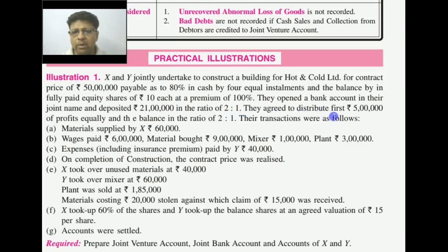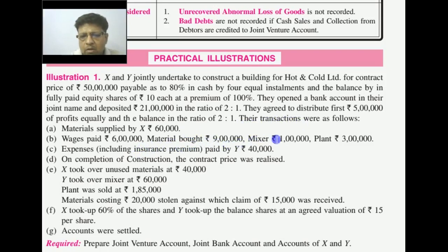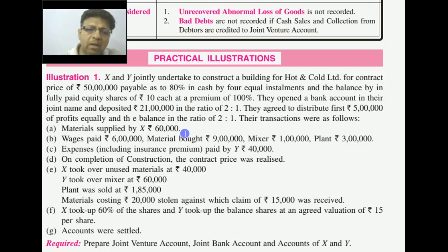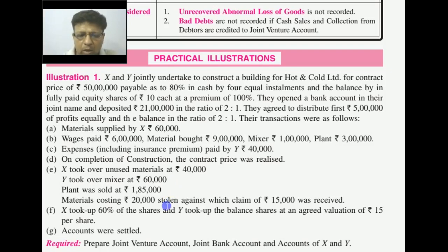They agreed to distribute the first Rs. 5,000,000 of profit equally, and the remaining profit in a different ratio. X supplied material from his own stock. Wages paid, material bought, plant — where no specific name is mentioned, by default these are assumed to be through the joint bank account. Where a name is mentioned, that expense is recorded individually. Insurance premium was paid by Y — Rs. 40,000.